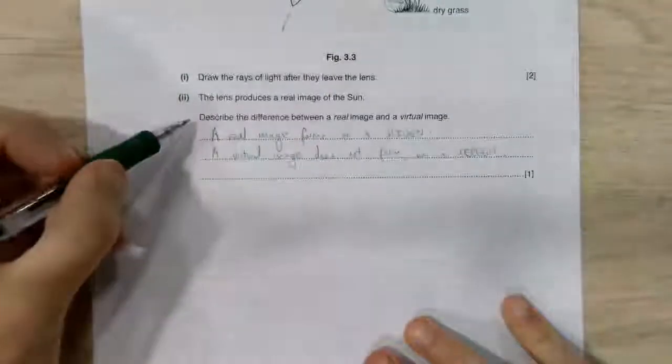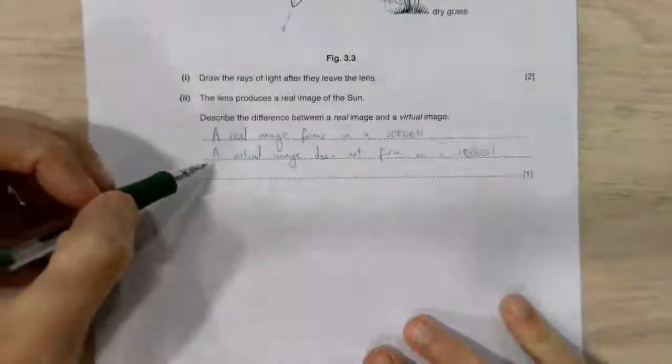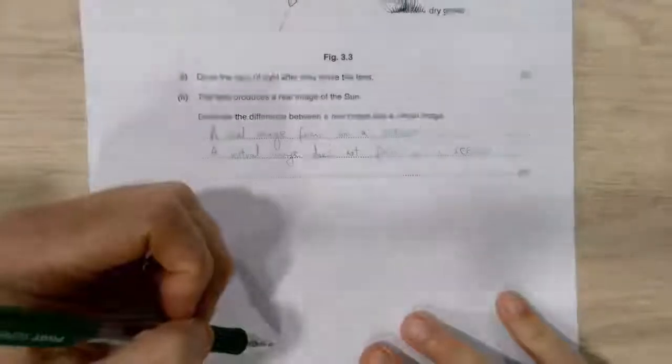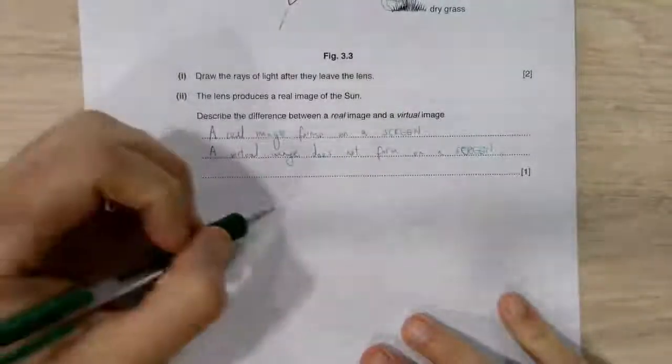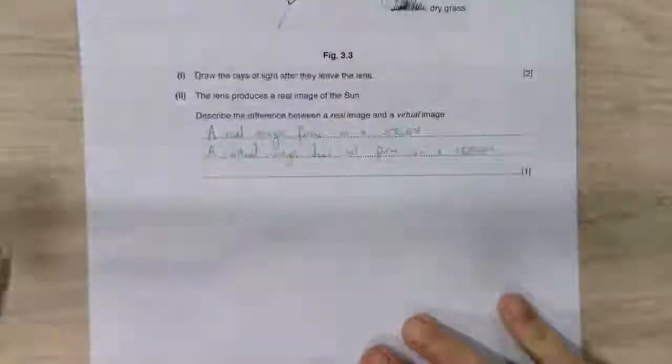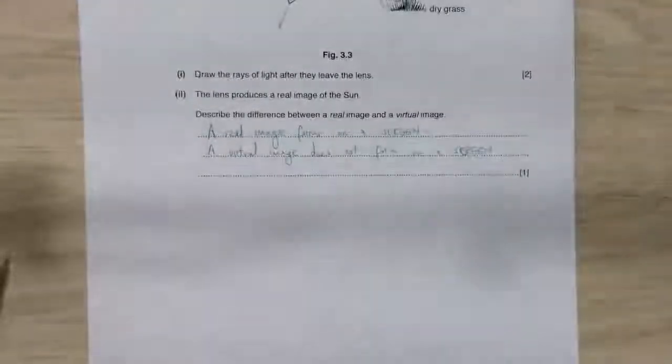Last point. We want to describe the difference between a real image and a virtual image. The real image is one which forms on a screen. It's where the light rays meet one another. And the virtual image does not form on a screen. That is the simplest way that I can think that you could define this. There are other ways. However, I think the simplest way is to use the idea of forming on a screen.